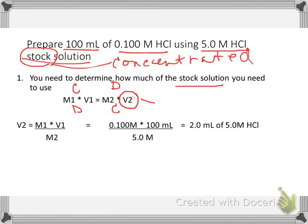So, if I rearrange my equation to solve for volume, it's going to be M1V1 over M2. Or, 0.1 molar times 100 milliliters divided by 5 molar is going to equal 2 milliliters of 5.0 molar HCl.